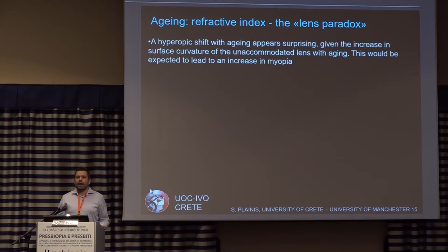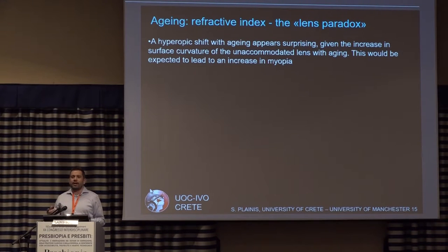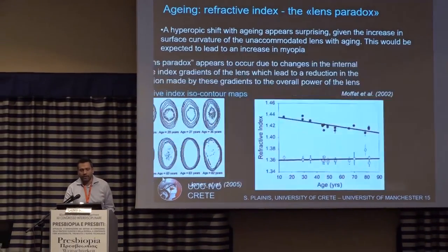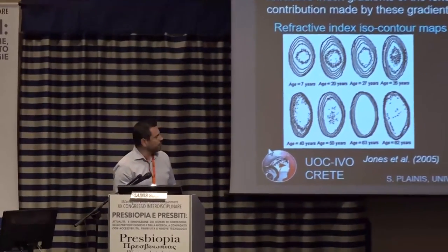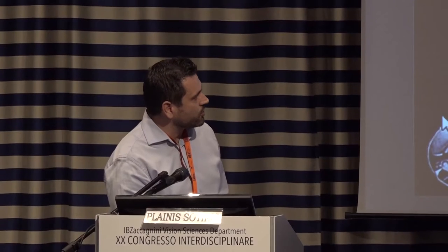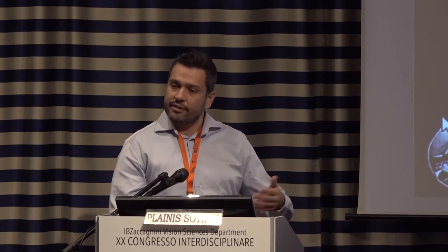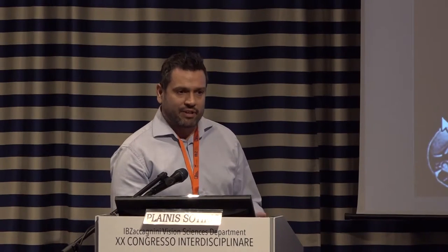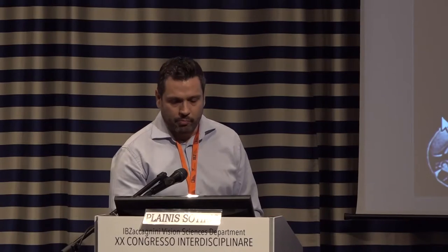Why does the eye shift to hyperopia? We would expect it to become more myopic because the lens becomes more curved with age. But Neil Charman explained this: the refractive index of the cortex decreases with age, which changes the gradient index of the lens as well as its power. So on average, we expect the eye to become less myopic or more hyperopic with age.